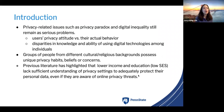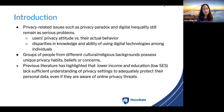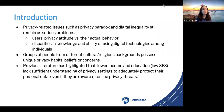As a part of the introduction, privacy-related issues such as privacy paradox and digital inequality still remain as serious problems. Privacy paradox refers to users' contradicting privacy attitude and their actual behavior. For instance, if a user says they're worried about privacy threats but they actually disclose more than they usually do, this can lead to huge privacy threats because they're not really sure what they're doing despite their worries.